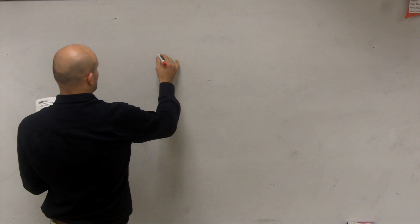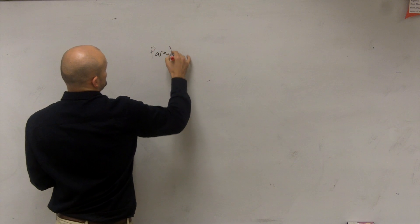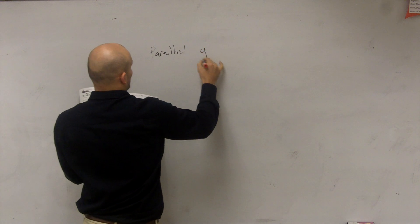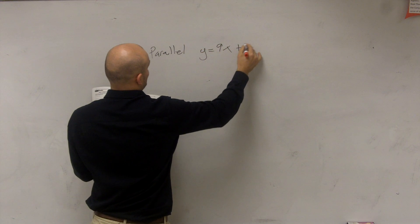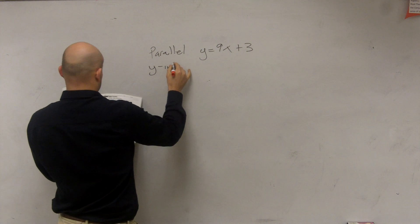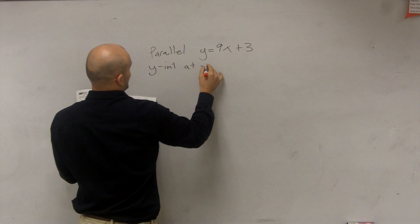Are you ready, Mallory? So for number seven, it says they want you to find a line that's parallel to y equals 9x plus 3, and it has a y-intercept at negative 2.